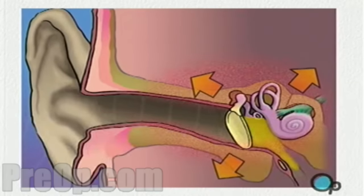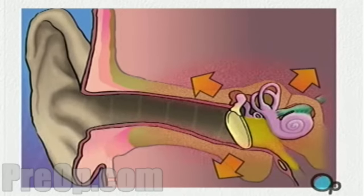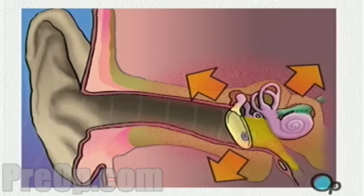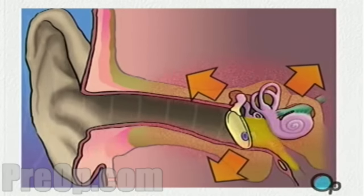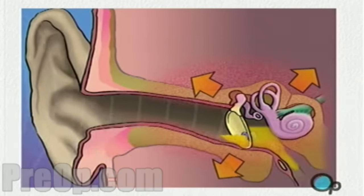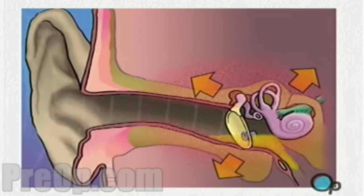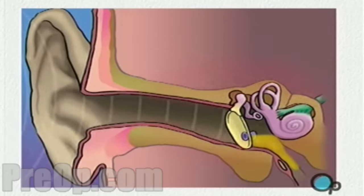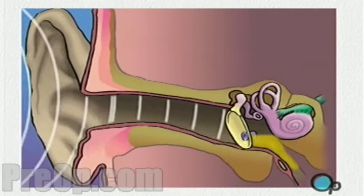A myringotomy is a simple procedure in which a small tube is inserted into the eardrum in order to allow fluids to drain out of the middle ear, reducing pressure and allowing any infection to be treated with antibiotics.